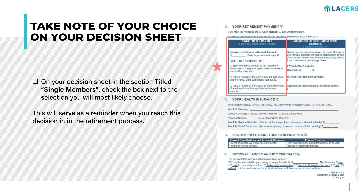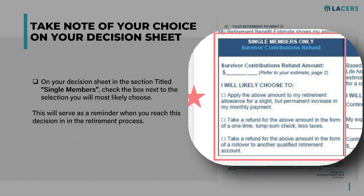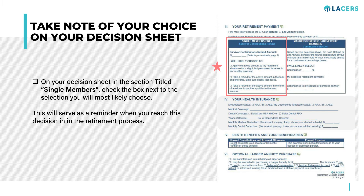Think about which option you would prefer and on your decision sheet in the single member box, check the box for the selection you will likely make. This will be your reminder for what you selected when you reach that question in the retirement process. Remember that your decision sheet is for your reference only and is not an official designation.